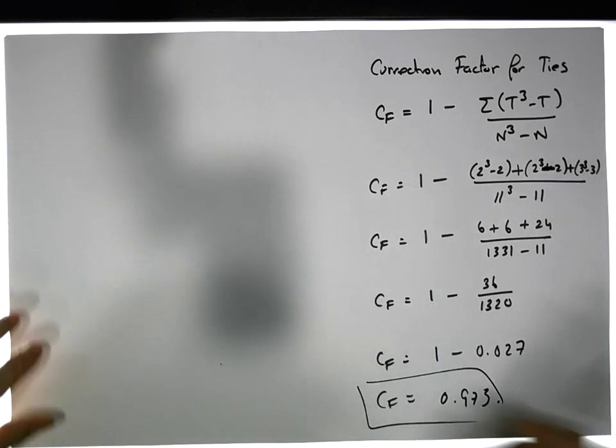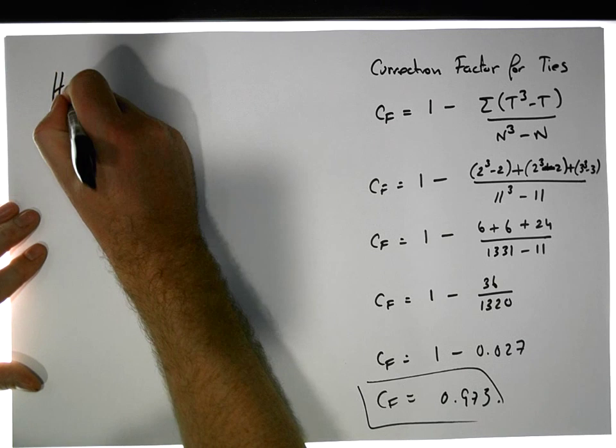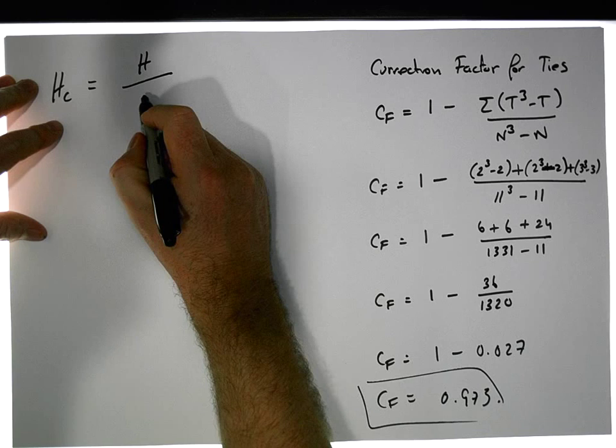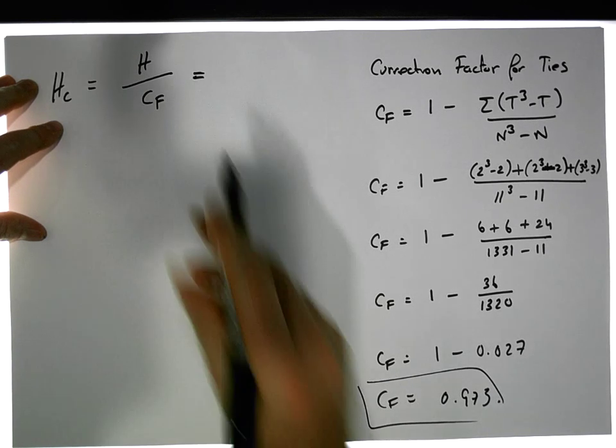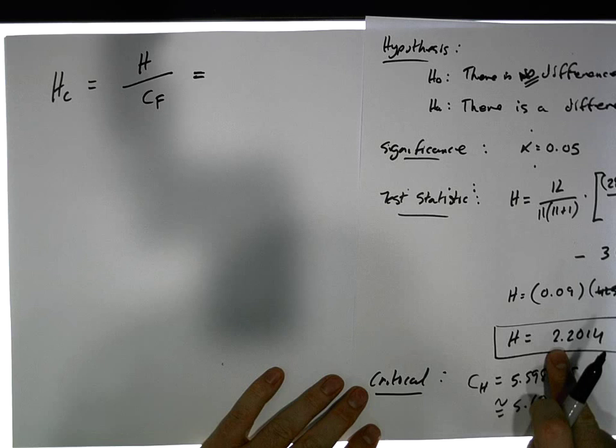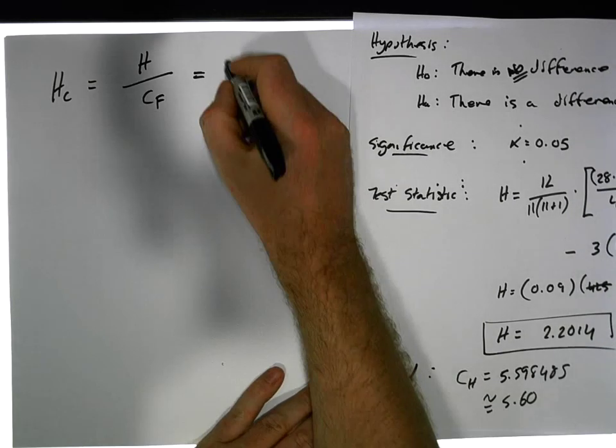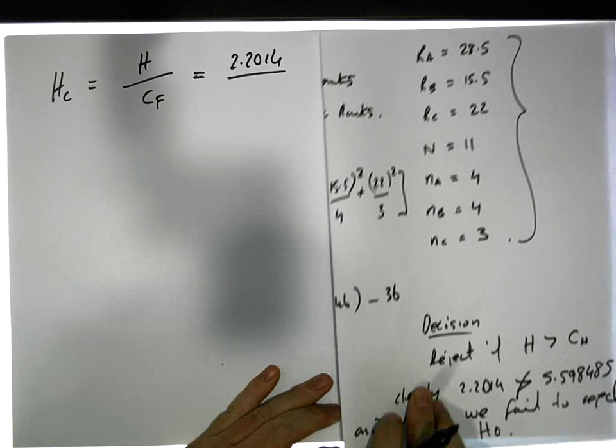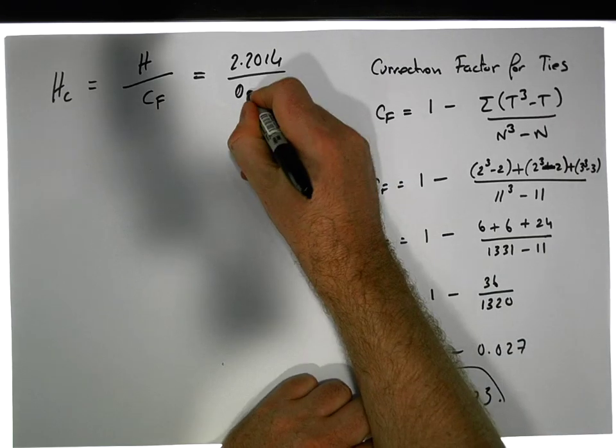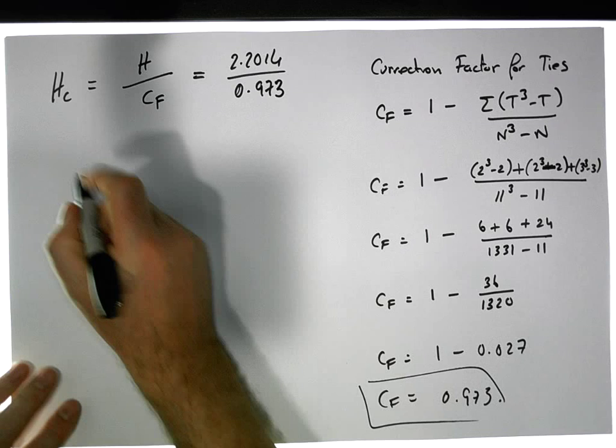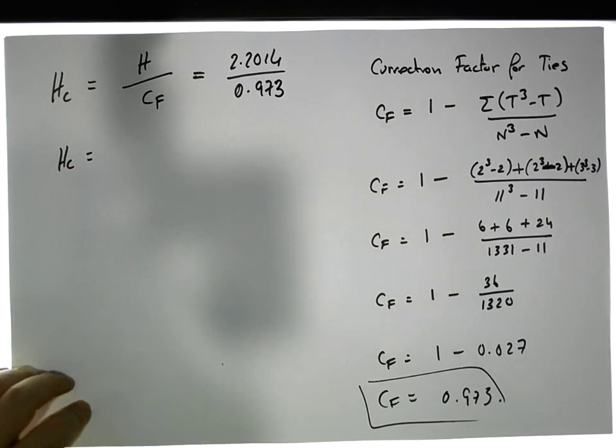Now we have our correction factor. The actual test statistic corrected is the original test statistic where we assume no ties divided by the correction factor. Our original test statistic was 2.2014, so it's 2.2014 divided by 0.973.